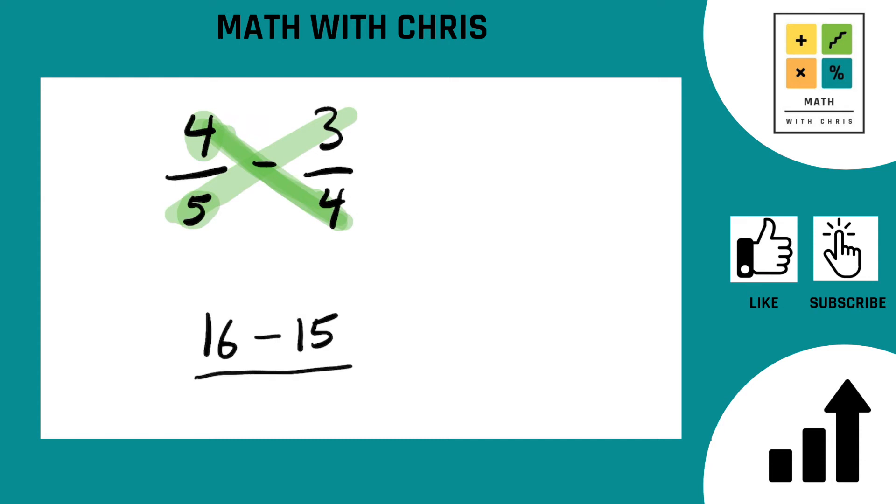That's going to give us the top of our fraction and the bottom of our fraction is of course just multiply right across the bottom. That is 5 times 4 gives you 20. So now just simplify that top. 16 minus 15 is 1 and the bottom stays the same, 20.